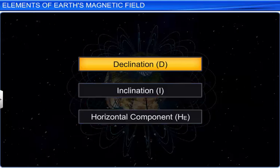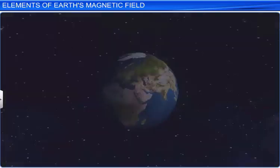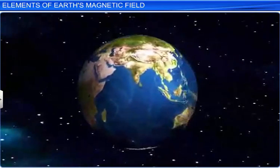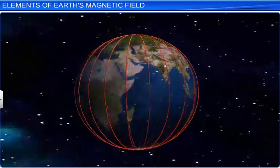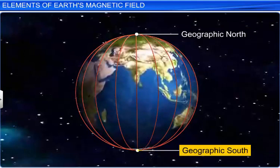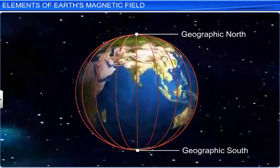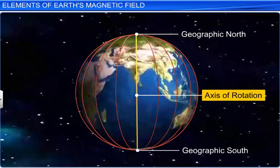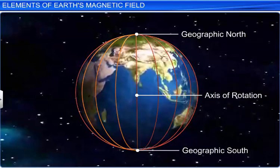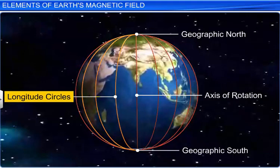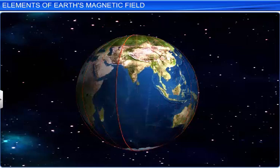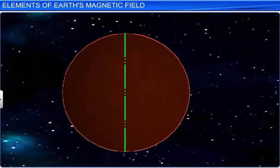First, the declination. We all know that the Earth is spherical in shape. On this spherical surface, we can draw an infinite number of imaginary circles passing through the Earth's geographical north and south poles. All these circles have one common diameter, which is the line joining the geographical north and south poles or the Earth's axis of rotation. These imaginary circles are called longitudes. Each of these circles, along with the Earth's axis of rotation, can be drawn in one plane. This plane is called the geographic meridian.